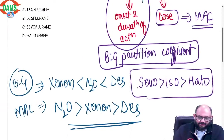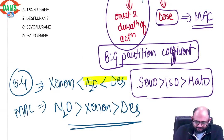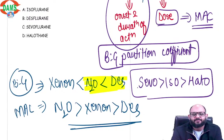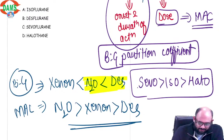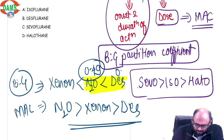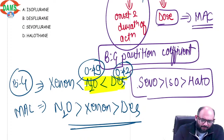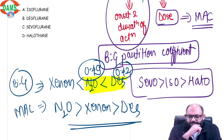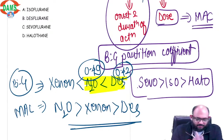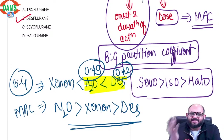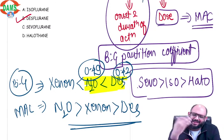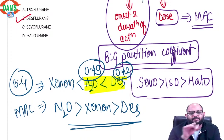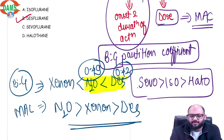If you remember that table, you can very easily decide that nitrous is similar to desflurane. Nitrous blood gas partition coefficient is 0.49 while des is 0.42 in terms of value — but we do not discuss values. So the correct answer is des. Des is the fastest volatile anesthetic agent. Nitrous oxide is the fastest inhaled anesthetic agent. They have very similar blood gas partition coefficients.